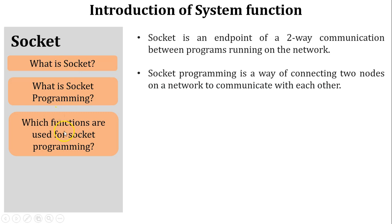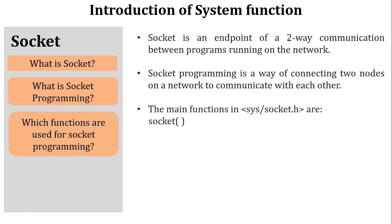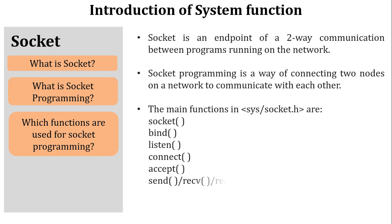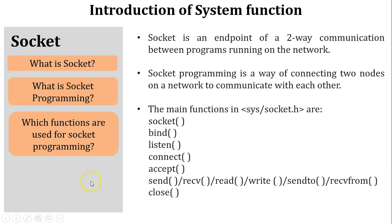Which functions are used for socket programming? The main functions of socket programming are: socket, bind, listen, connect, accept, send and receive (or send to and receive from), and the last one is close. These are the seven main functions used for socket programming.